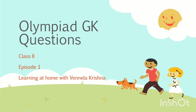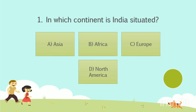Shall we start the quiz for class 2? Question No. 1: In which continent is India situated? Option A: Asia. Option B: Africa. Option C: Europe. Option D: North America. Your time starts now. The answer is Option A: Asia.